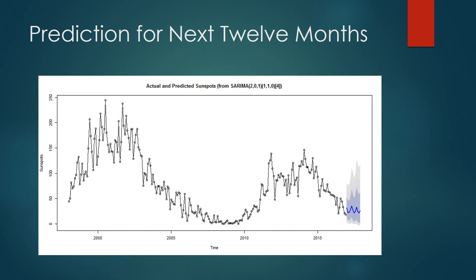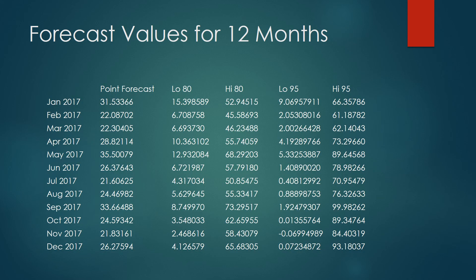The chosen model, SARIMA(2,1,0)(1,1,0) with a period of 4, has been used to forecast values for the next 12 months. These have been plotted. The forecast values predicted by the model for the next 12 months are displayed in a table, including the upper and lower prediction intervals.